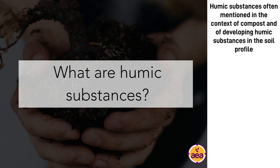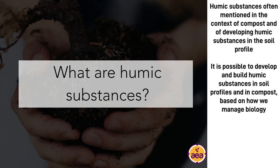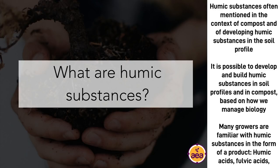These are the humic substances we really want to foster and develop in our agriculture ecosystems. It is possible for us to develop and build these humic substances in soil profiles and in compost based on how we manage biology and how we manage plants. But a part of the conversation that's much more familiar for many growers is thinking about humic substances in the form of a product — humic acids versus fulvic acids versus dry powdered humates, either water-soluble humates or humates as a soil amendment. We've tested these various fractions for many years and I wanted to offer a commentary on what we have observed and how we think about using them.